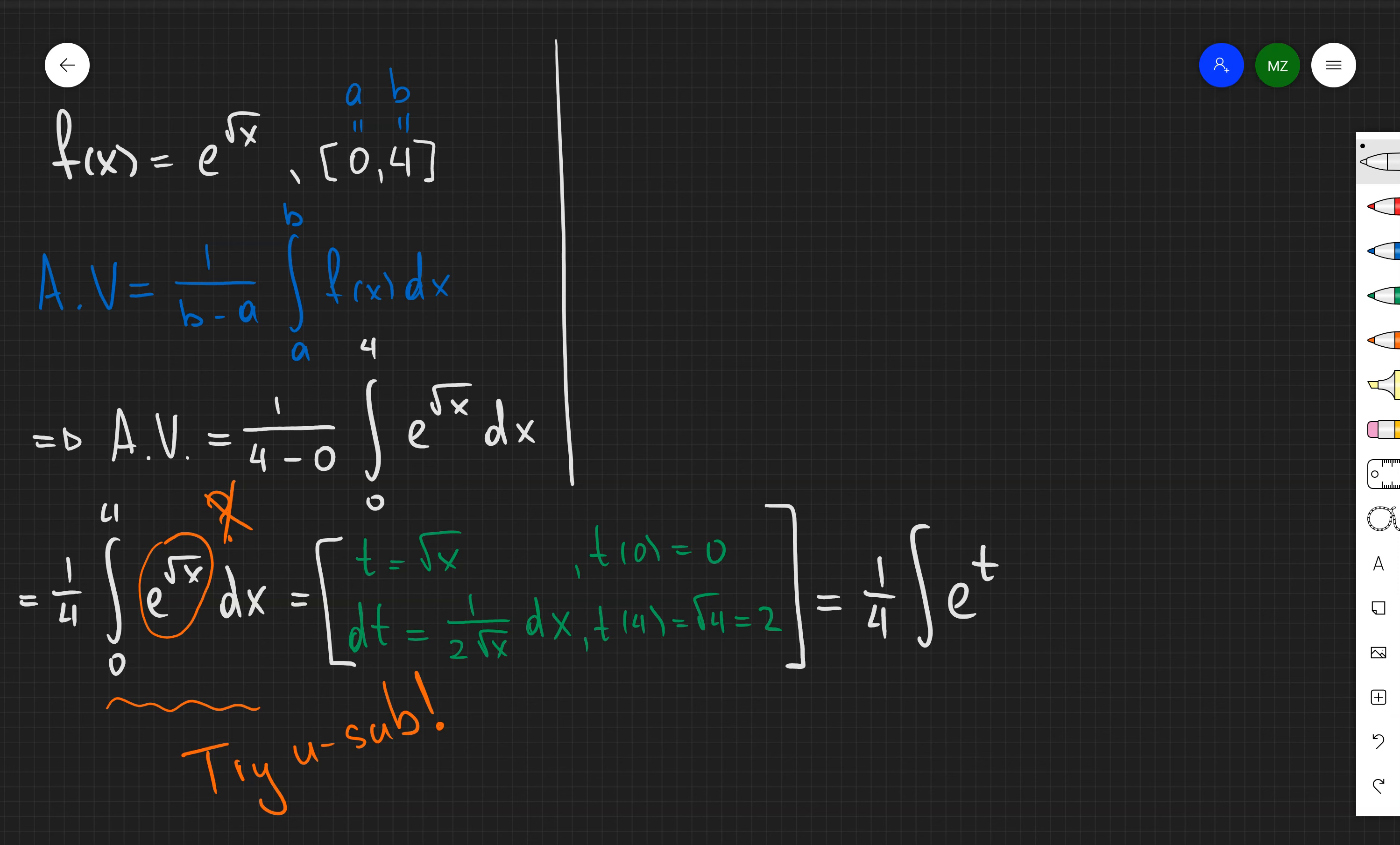So I'm going to obtain the integral of 1 over 4 e to the power of t. But what is going to happen with dx? For that case, just observe that we have the part of dt of 1 over 2 square root of x dx. So what I'm going to do, I'm going to multiply both sides by 2 square root of x. And then we have the relation between square root of x and t. So I'm going to have dx is equal to 2t dt.